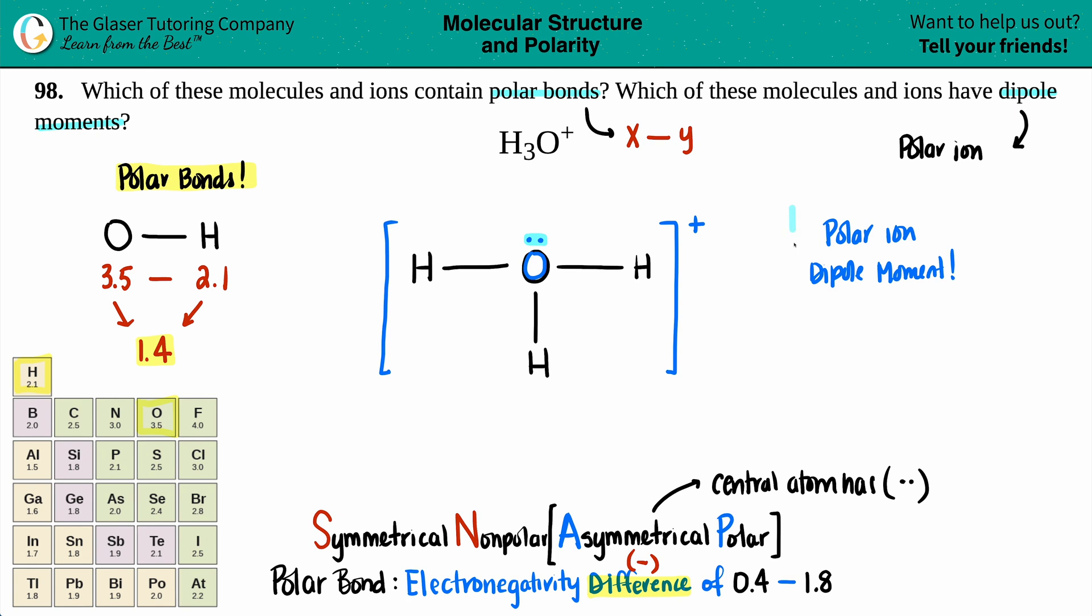So in this case, we have polar bonds and the whole entire molecule, well, in this case, ion is polar. So it has a dipole moment, unequal sharing of electrons. And that's it.